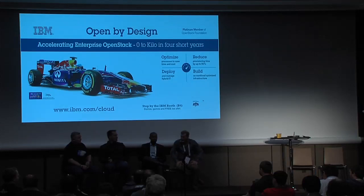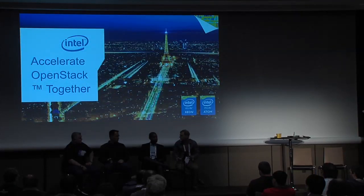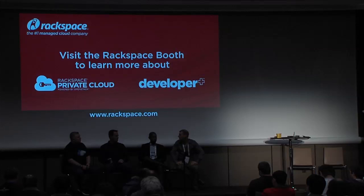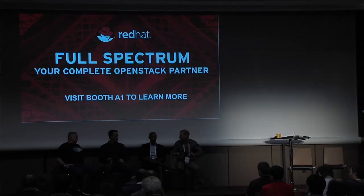Something I've seen a lot in the last 12 months is that hybrid cloud really seems to mean, among practitioners, one public and one private. We don't really run into the use case of running hybrid between four different public cloud providers and two different private cloud providers. I'm getting the sense that hybrid cloud really means two clouds — one public, one private. What do you see there?